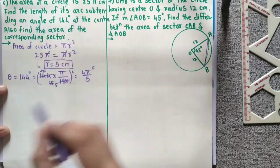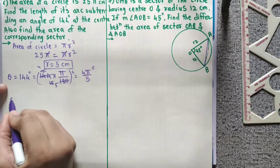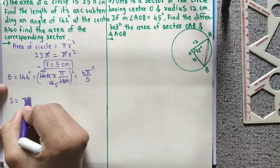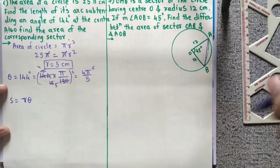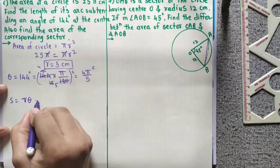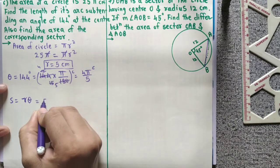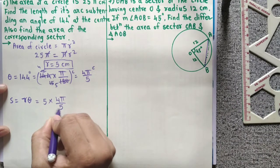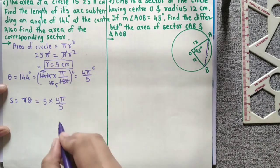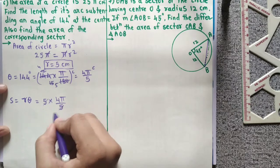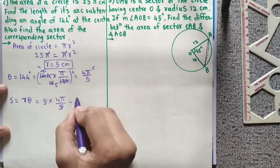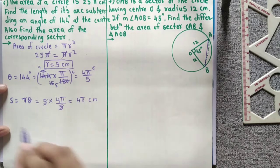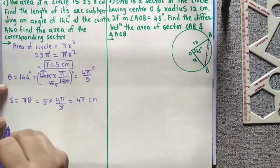We need to find the length of arc, meaning S. S equals r theta. R is 5, into 4 pi upon 5. The fives cancel, giving arc length equal to 4 pi cm.